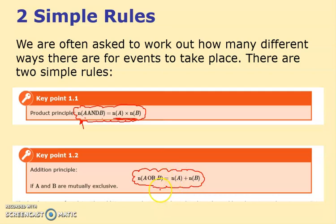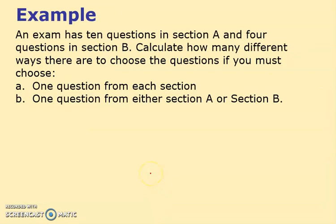Here's an example. An exam has ten questions in section A and four in B. How many different ways are there to choose the questions if you must use one from each section? Well, one from each section - I've got ten in the first section, four in the second section. It's just the product principle. I think there's 40 ways of doing it.